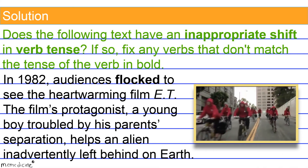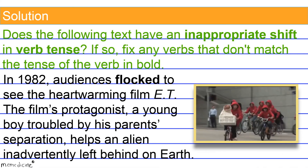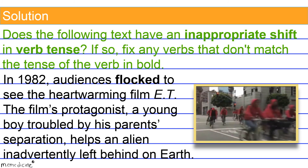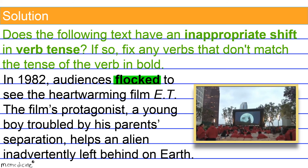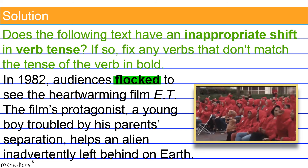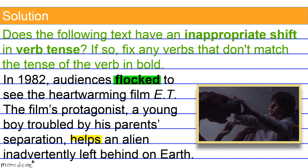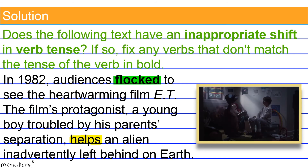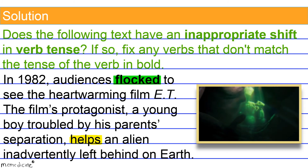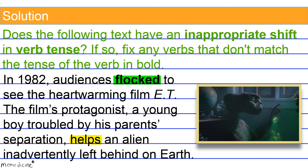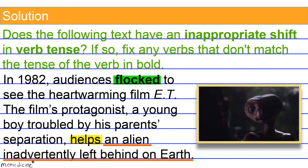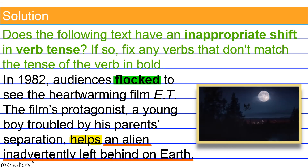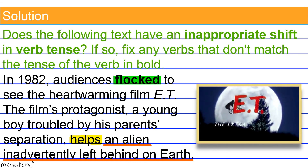Alright, back to the original question — now for the solution. Look at the verb in bold: 'flocked.' It is in the past tense. However, notice that the third verb after the interrupting phrase offset by the commas is 'helps.' It is written as a simple, singular, third person, present tense verb form. With the verb 'helps,' the sentence shifts to the present tense to discuss the contents of the film E.T. This is an example of the literary present tense. No edit is required. This verb form is correct.